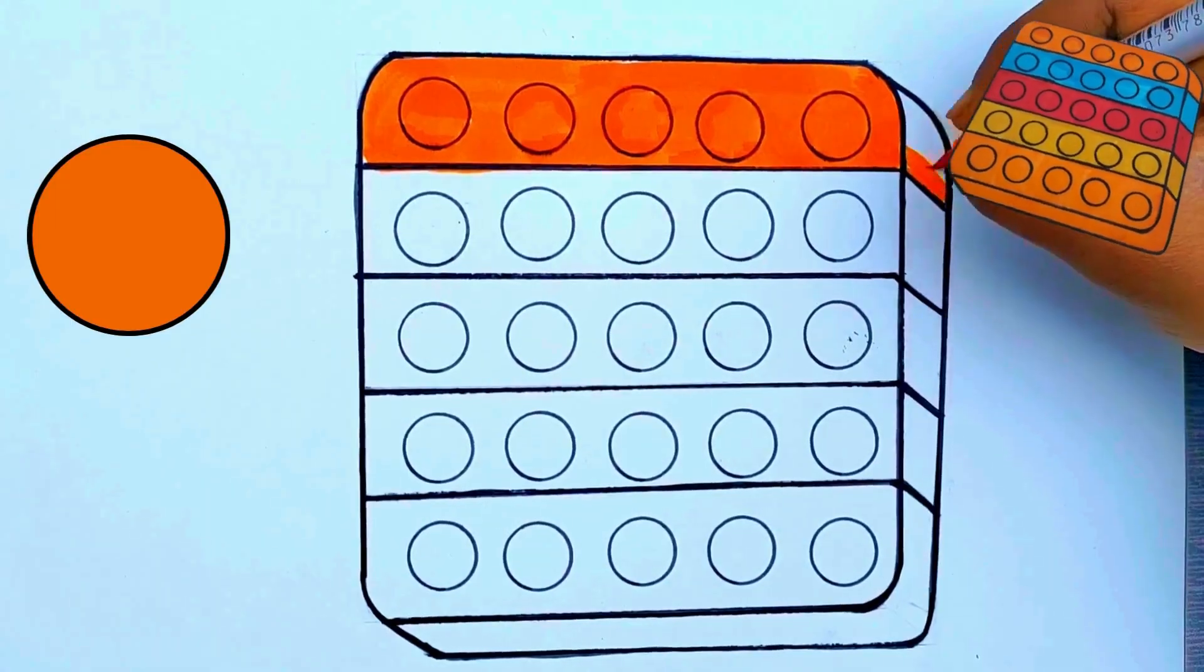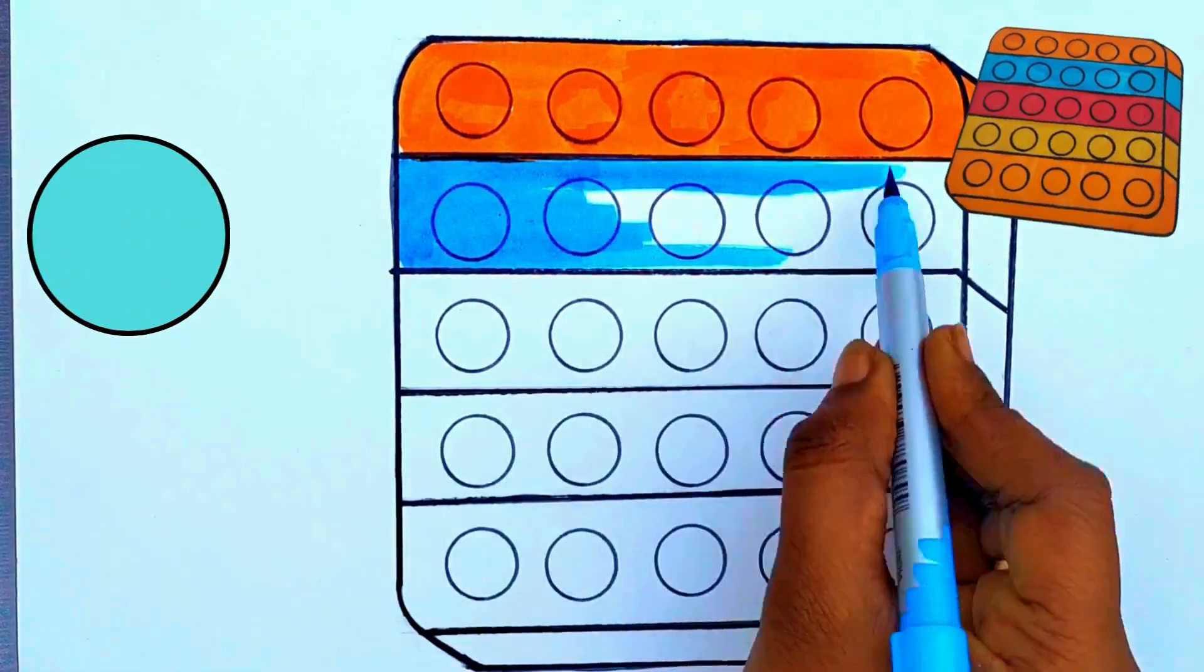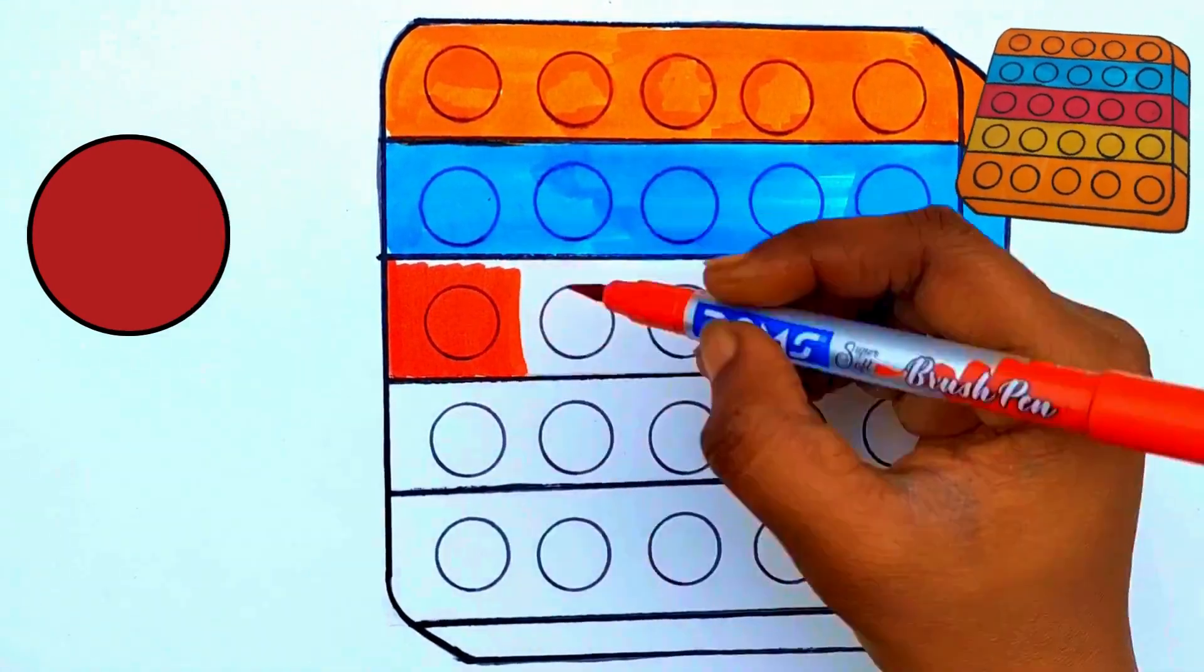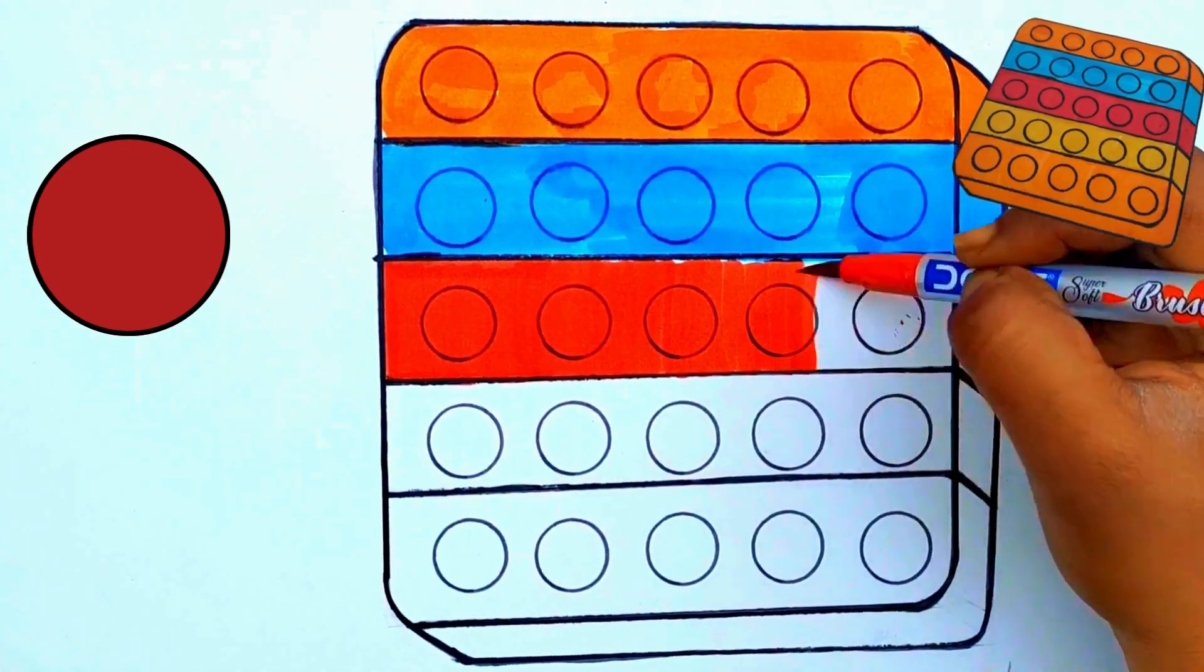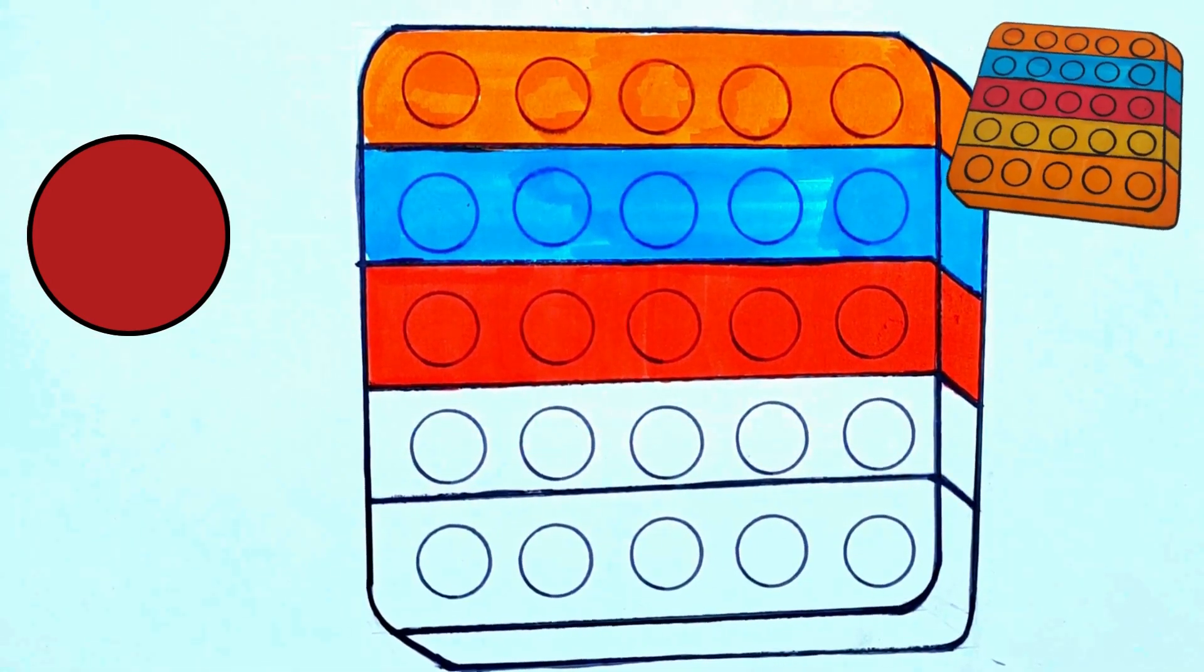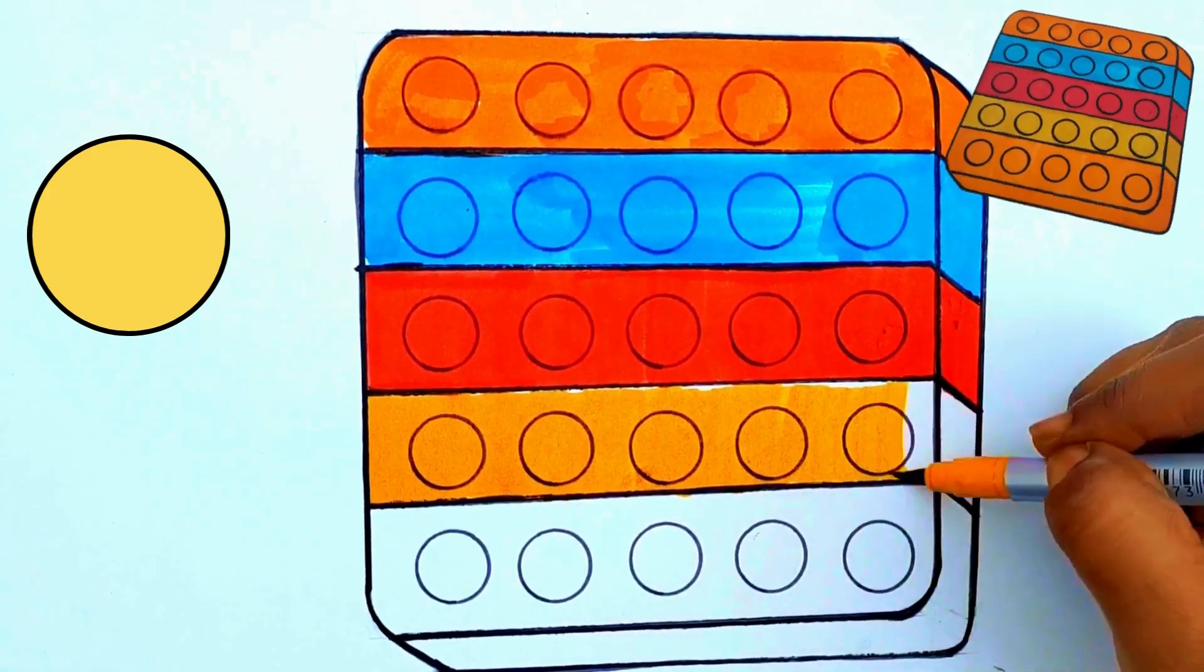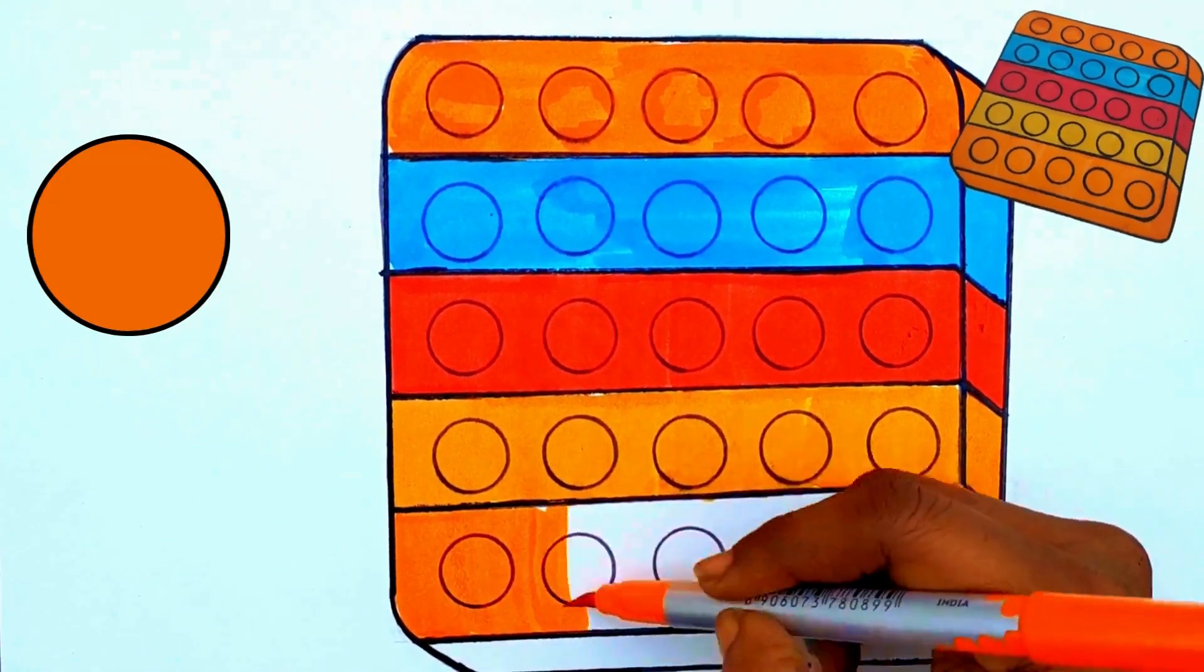Take a sketch pen and colour it in orange. Now blue colour. Now red colour. Now yellow colour. Now orange colour again.